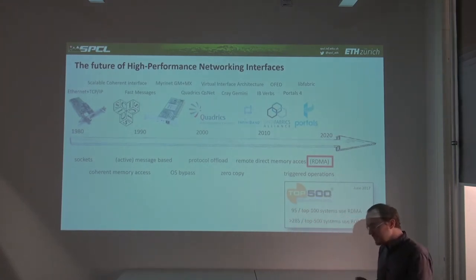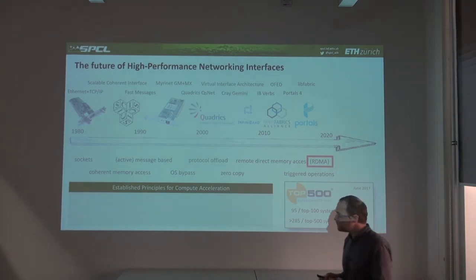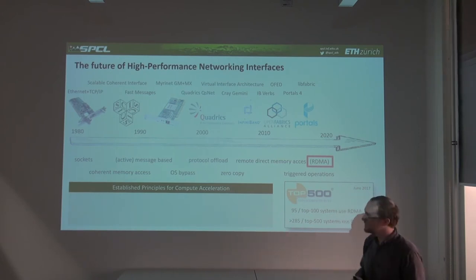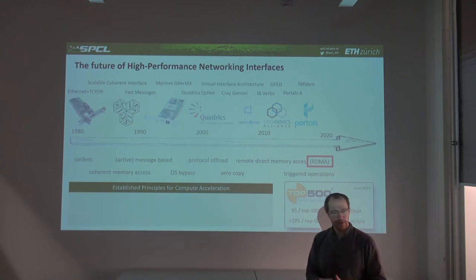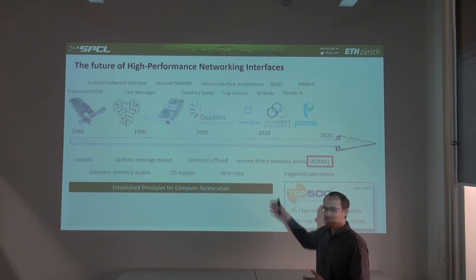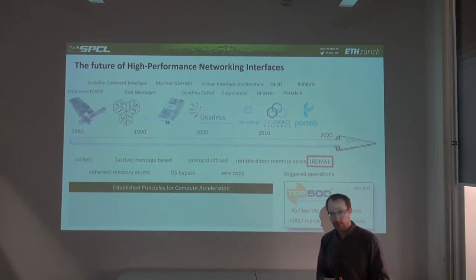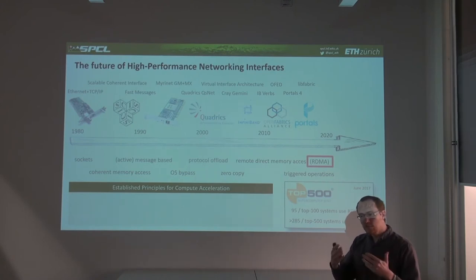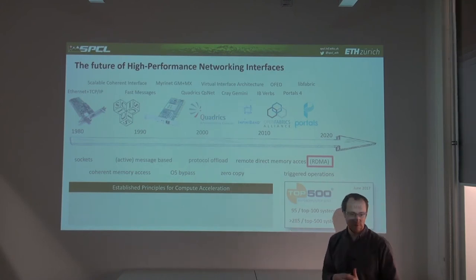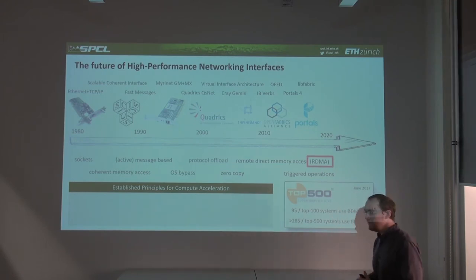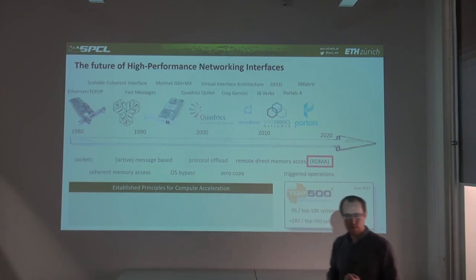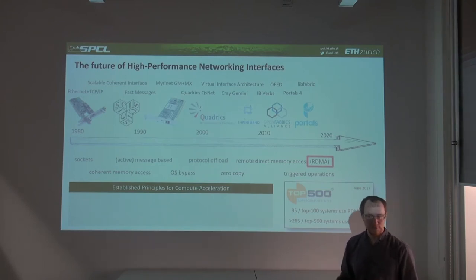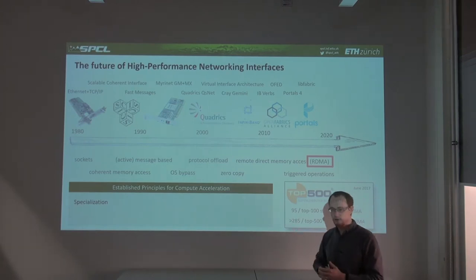We can frame this as a way to accelerate the network — accelerate packets in the network. We've applied acceleration to compute for at least the last decade. We have GPUs, FPGAs, tensor processing units to optimize particular calculations. The major principle of compute acceleration is specialization — specializing compute units to a particular function, whether broader like GPUs or narrow like tensor processing units, which are really only good for matrix multiplication with specific shape and precision.